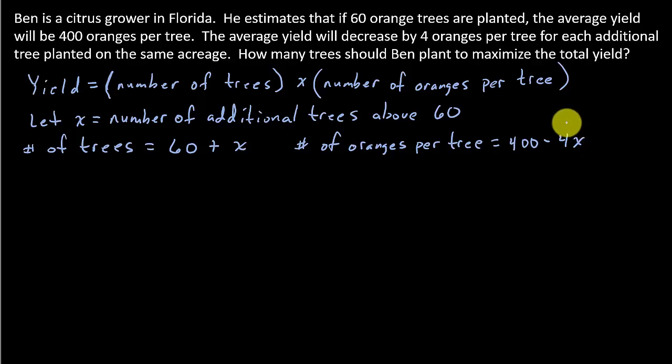and 2 additional trees minus 4, because each additional tree decreases the yield by 4 oranges, so if there's 2 trees, it's going to be 8 oranges per tree, so 400 minus 8.